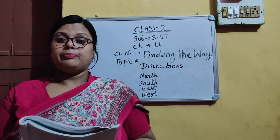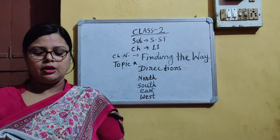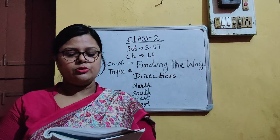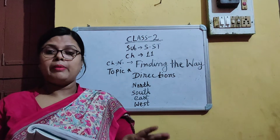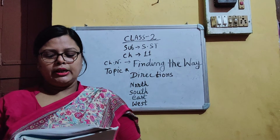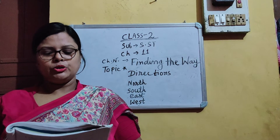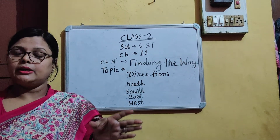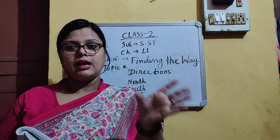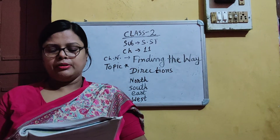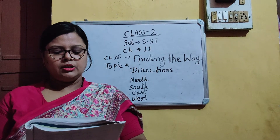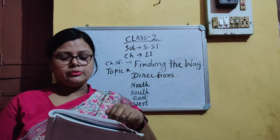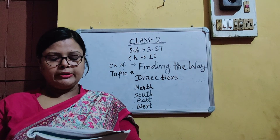A map is a drawing of a place on paper. The direction of a neighbourhood, a town or a city, a country or a continent can be shown on a map easily and accurately. The top of the map shows the north.